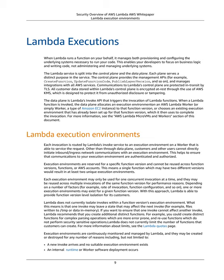Each execution environment may only be used for one concurrent invocation at a time, and they may be reused across multiple invocations of the same function version for performance reasons. Lambda does not currently isolate invokes within a function version's execution environment, which means one invoke may leave state that affects the next invoke — for example, files written to /tmp or data in memory. If you want to ensure that one invoke cannot affect another, Lambda recommends creating additional distinct functions. Lambda does not currently limit the number of functions that customers can create.